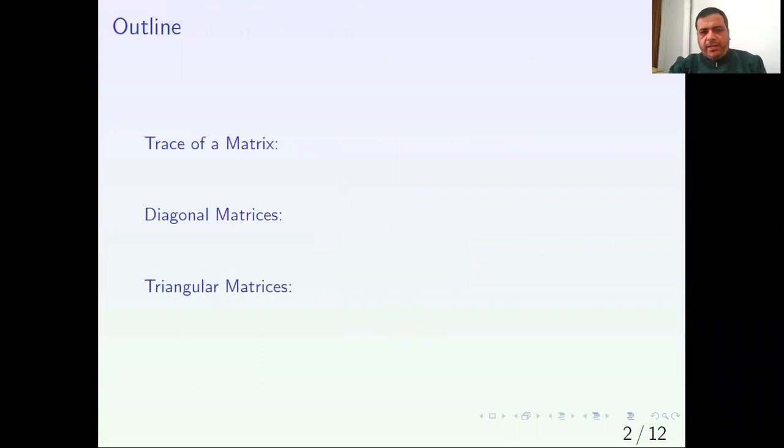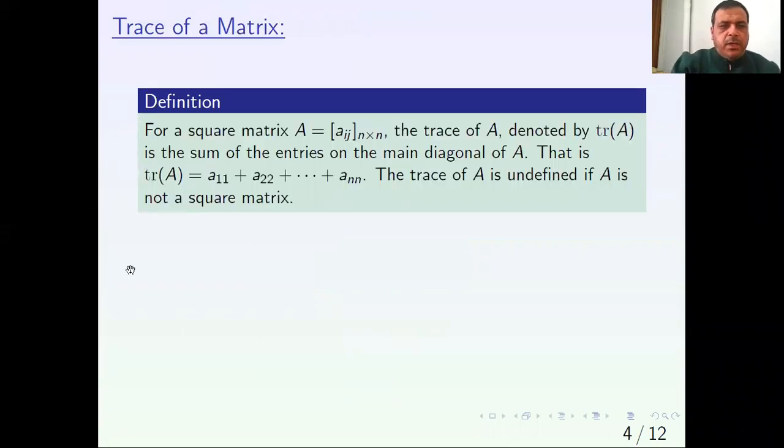The first part we will discuss is the trace of a matrix. For a square matrix A of order N, the trace of A, denoted by this notation, is the sum of the entries on the main diagonal of A.